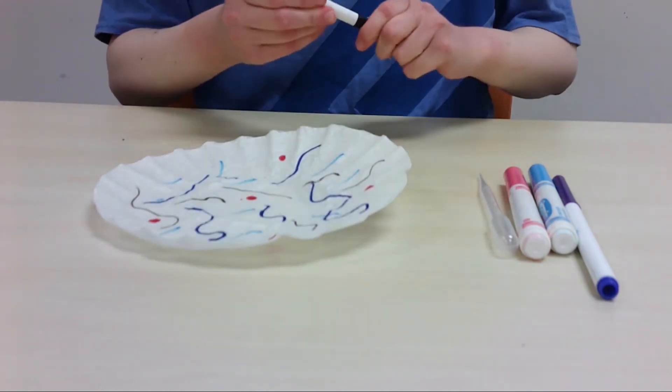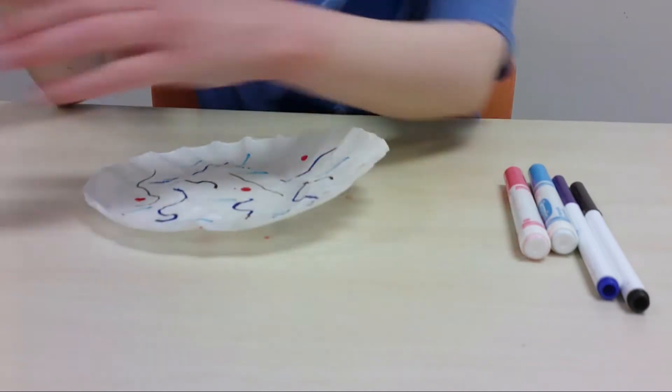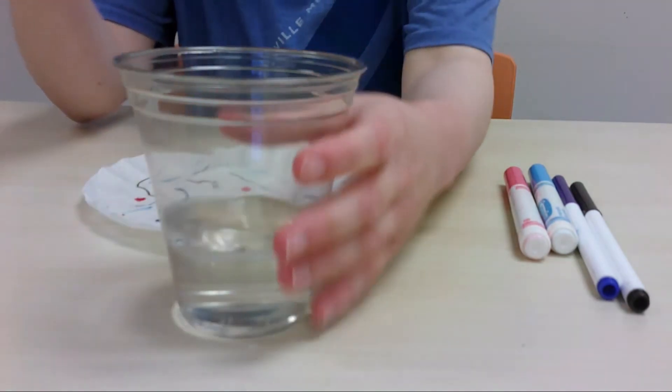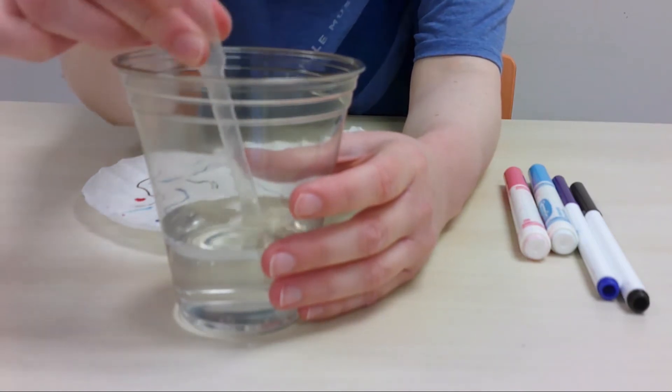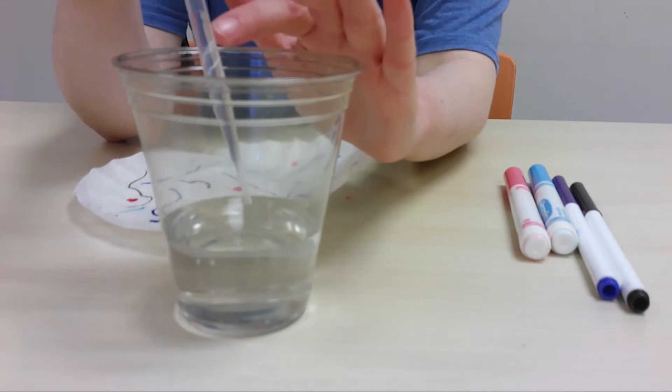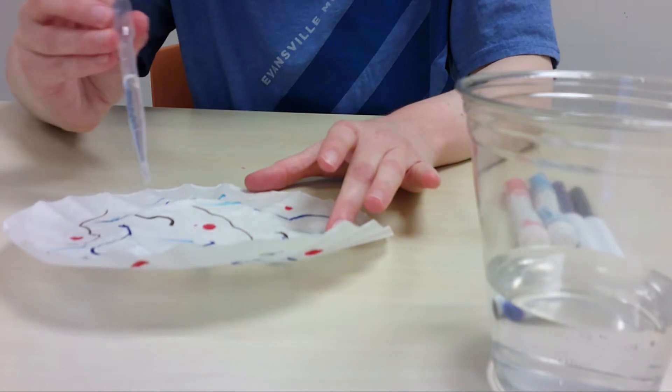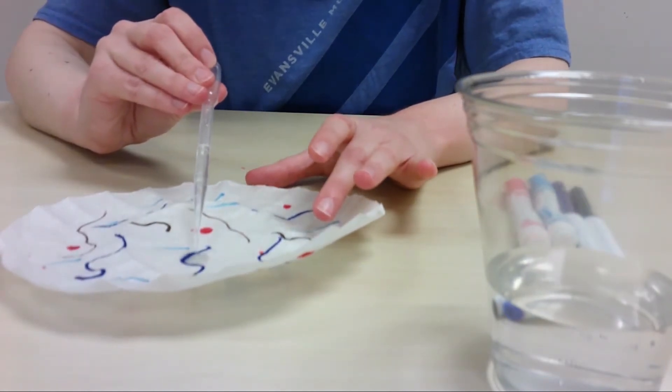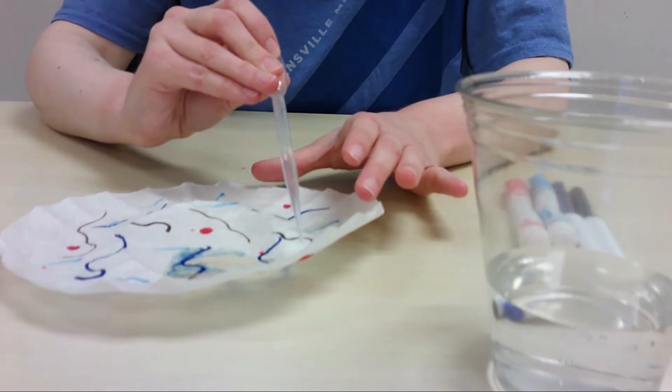Okay, so next you're going to take your dropper or pipette and a little bit of water. What you do is you squeeze the top and it causes water to go up. You take just a couple drops and you're going to gently squeeze.